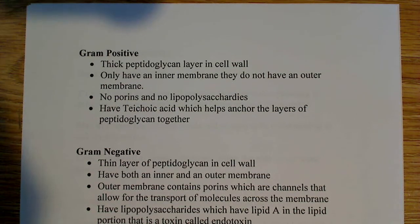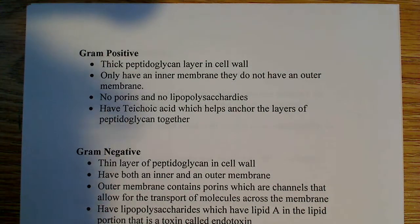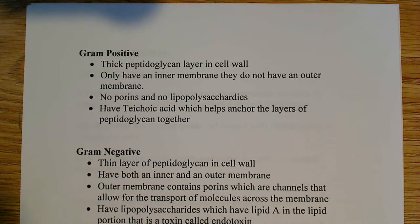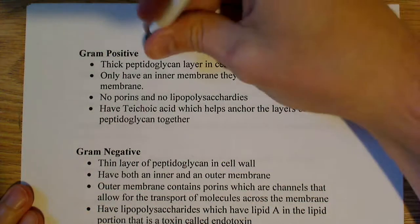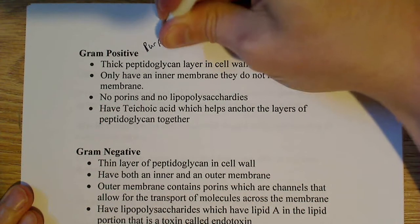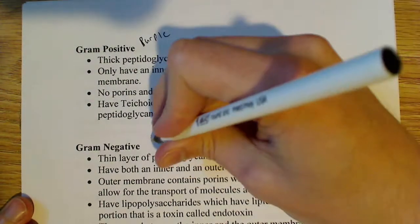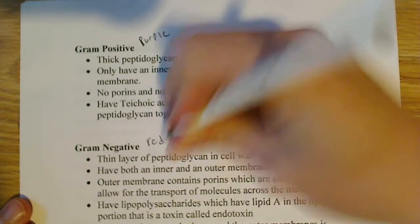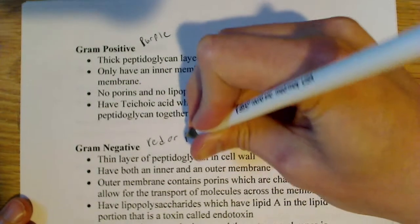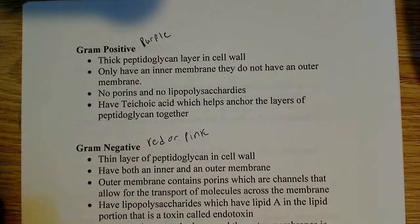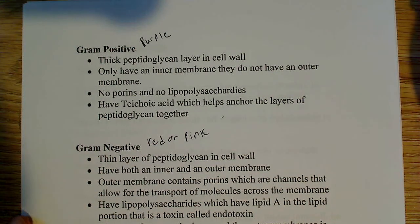There are differences between gram-positive and gram-negative. Gram-positive stains purple, while gram-negative stains essentially red or pink, depending on how you want to call it. So one stains purple and one stains pink, and that is what allows you to distinguish which one is gram-negative and which one is gram-positive.